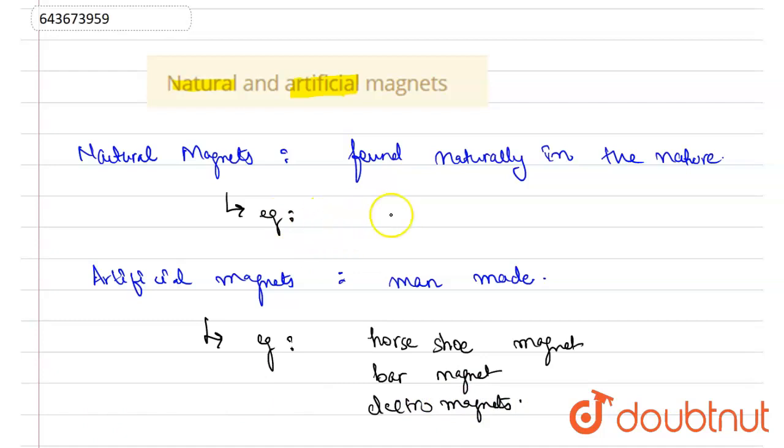Whereas natural magnets example would be magnetite. Hope you've understood this well.